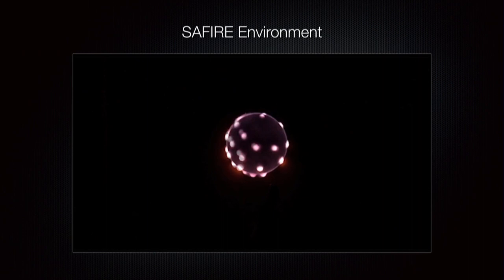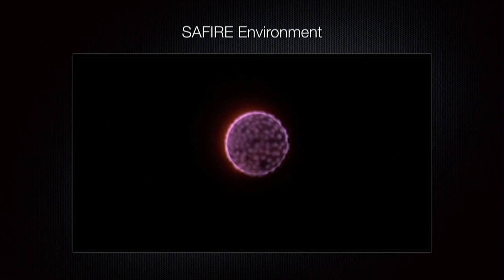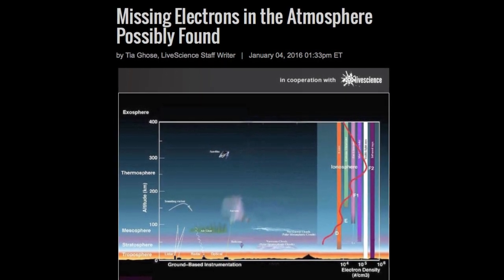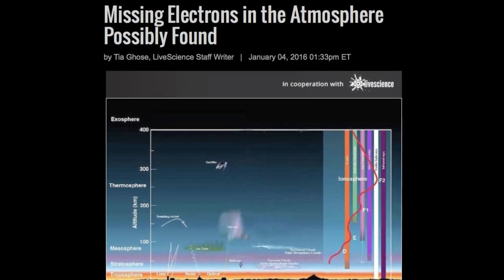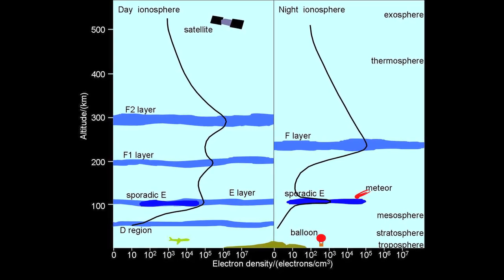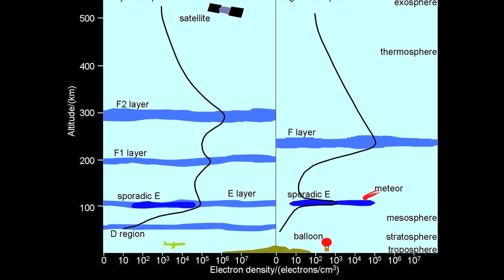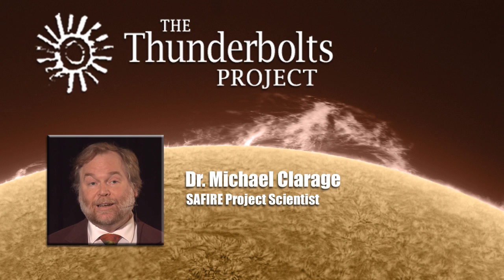With the SAFIRE Chamber, we are in a unique position to run experiments exploring the possible overall electrical nature of stars and planets. Coming back to the Space.com article, I would propose that the phrase 'the case of the missing electrons' is somewhat of a misnomer. Calling them missing implies there is something wrong about it, like an awkward glitch in what should be nature's otherwise tidy charge neutrality.